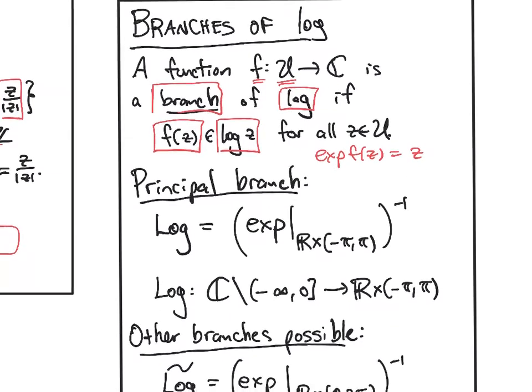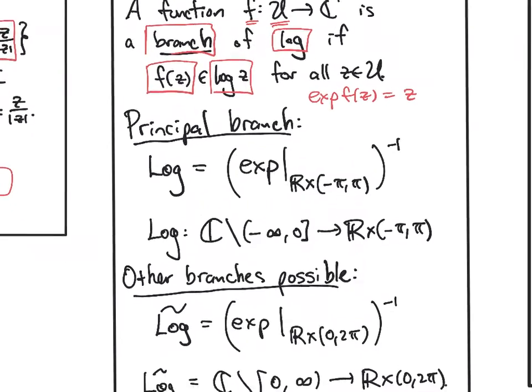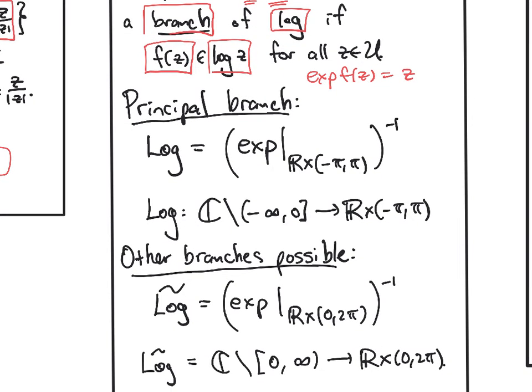Here are some special branches. The principal branch, which we write with a capital L, so the principal branch of the logarithm, will be the inverse function of the exponential function restricted to one of these strips of length 2π. So it'll be ℝ cross the interval (-π, π), and this is the open interval.